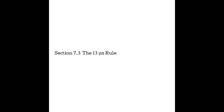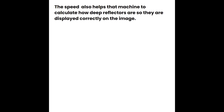Section 7.3 — the 13 microsecond rule. Our PRP and PRF formulas help the machine know when echoes from the max imaging depth have returned so it can send a new pulse. The machine runs a stopwatch during the off time — it knows exactly when it sent the pulse and waits for echoes to return from the reflectors that pulse interacts with. As each echo returns, it records the elapsed time.